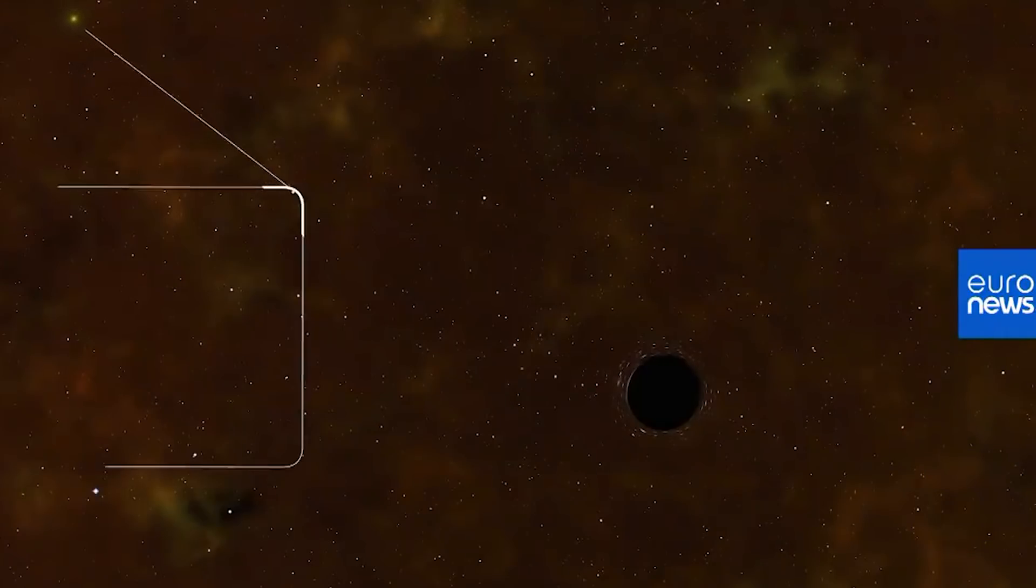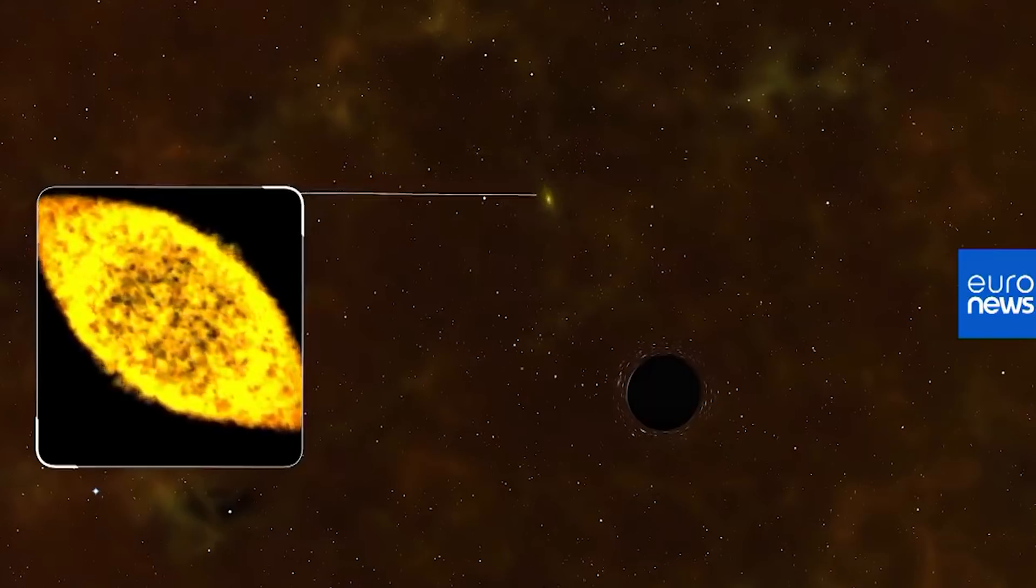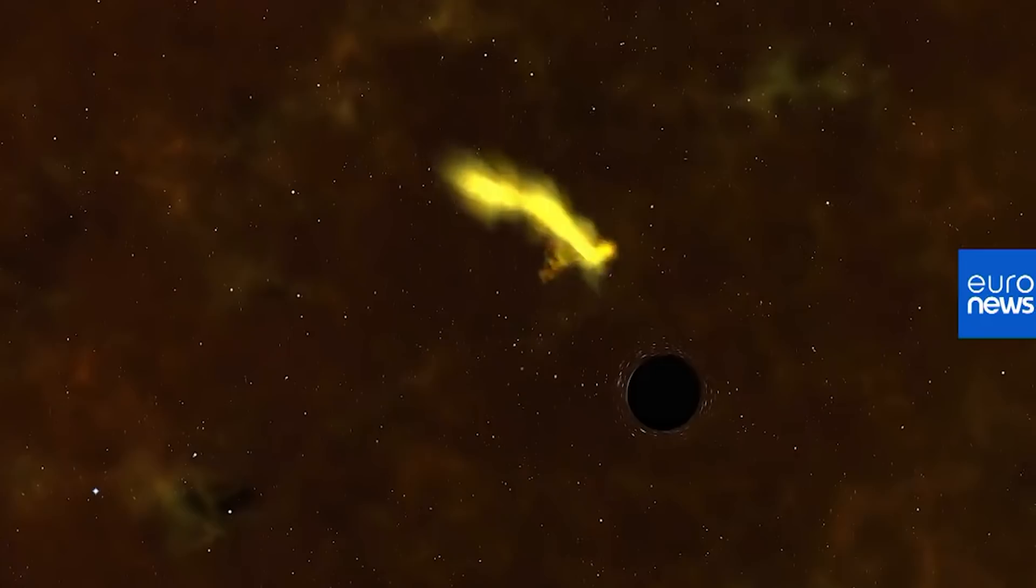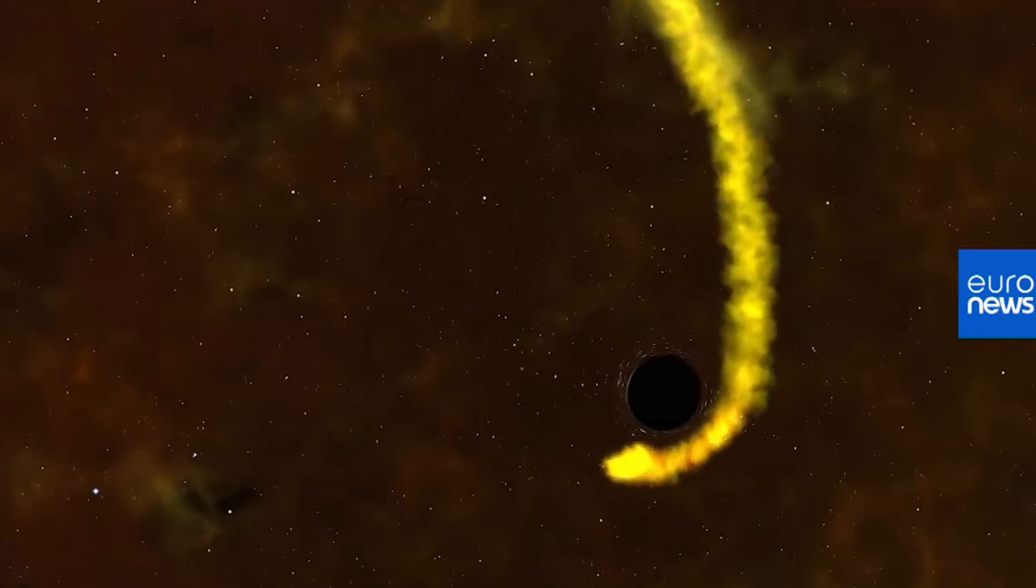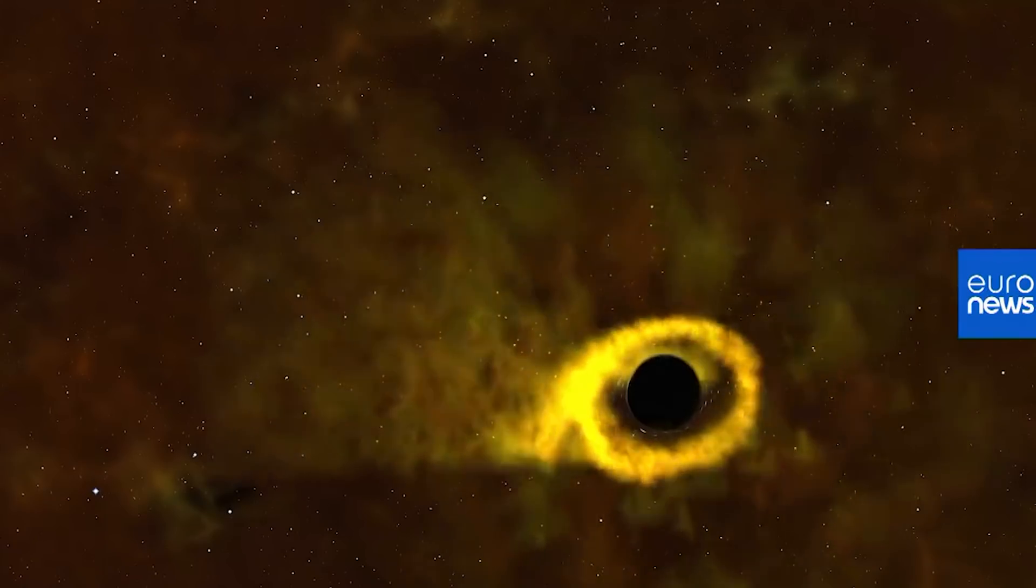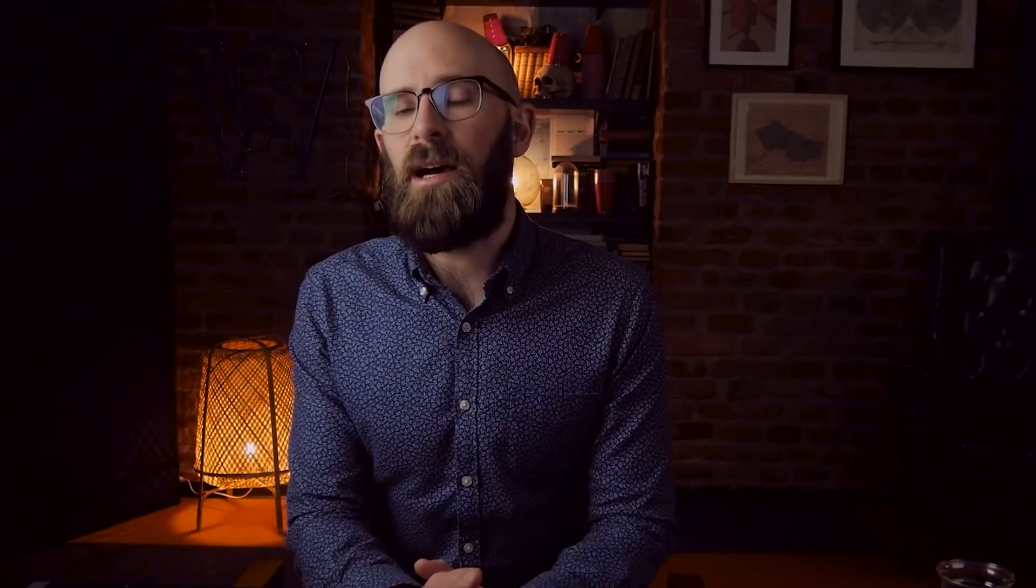When stars get too close to a black hole, they end up being torn to pieces, creating a long tail of gas as the star's material gets stretched into an accretion disk around the black hole. These events only happen about once every 10,000 years in galaxies the size of the Milky Way, but thanks to satellites and observatories like TESS and Neil Gehrels, we're able to see them as they happen in other galaxies. Eerily enough, the star is about the size of our own.